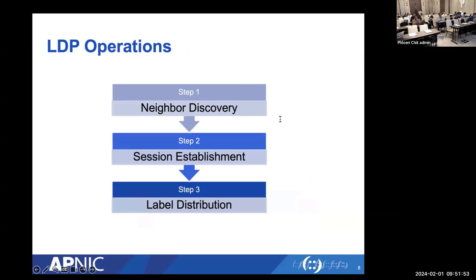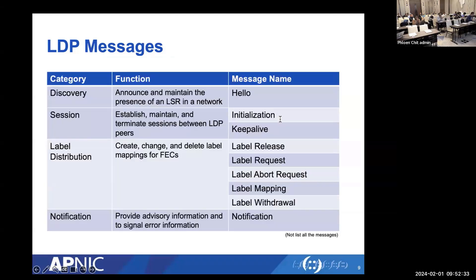For LDP to be fully operational, there are three main steps. First, neighbor discovery: the router discovers whether neighboring routers are also running LDP, using UDP Hello messages — similar to IGP Hello messages. Once a neighbor is found, the router establishes a reliable LDP session using TCP. Finally, when the session is established, the router exchanges label information with its LDP peers. LDP messages include: Hello (discovery), Initialization and KeepAlive (session setup), and label-related messages — Label Mapping, Request, Release, Withdrawal — plus Notification for error signaling.